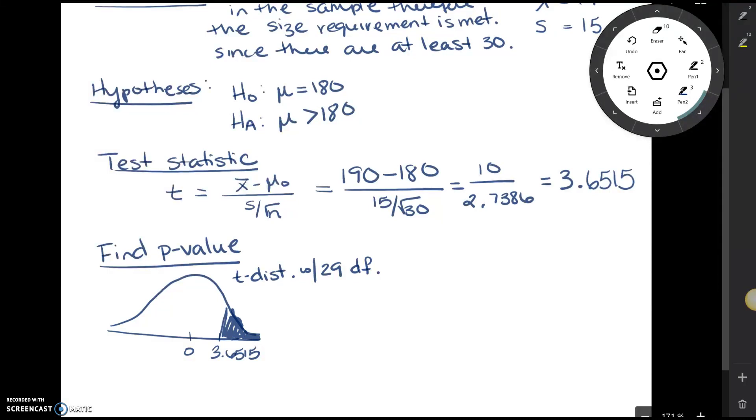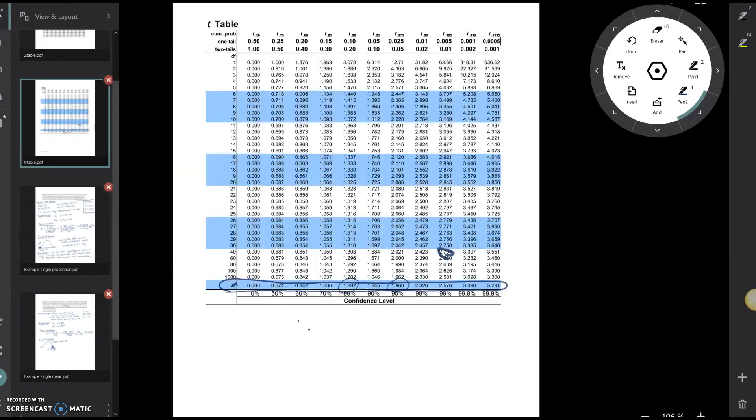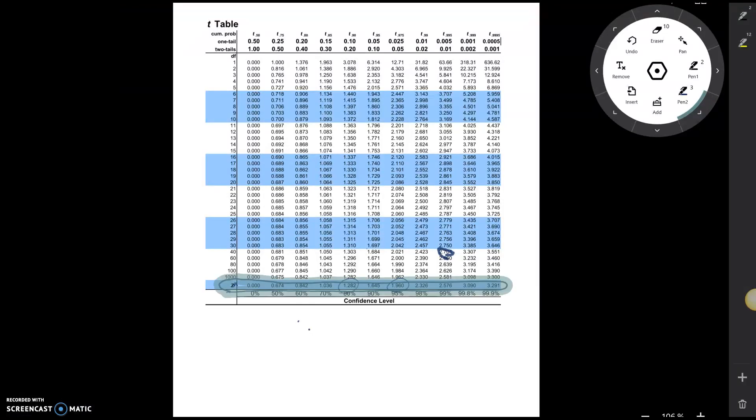To find this area, we're actually going to use a t table. The t table isn't as exact as the standard normal table. It's going to give us a range for this area. So let's look at how to find that. Again, notice our test statistic is 3.6515. Going to our t table, first thing I'm going to do is identify—that's from an old video, so erase that out.